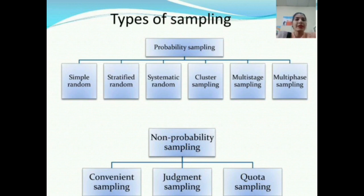Types of sampling probability sampling are simple random sampling technique, stratified random sampling technique, systematic random sampling technique, cluster sampling, multistage sampling and multiphase sampling.